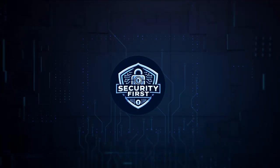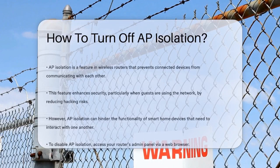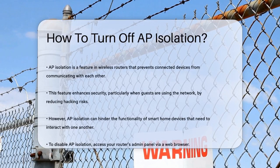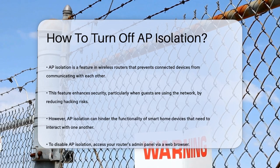Security First Corp — safety through knowledge. How to turn off AP isolation. Have you ever wondered why your smart home devices like Google Home or Sonos speakers can't connect to each other over your Wi-Fi network? The answer might lie in a feature called AP isolation. Let's dive into what AP isolation is and how you can disable it.